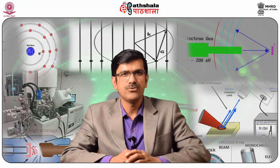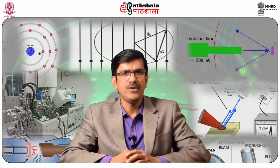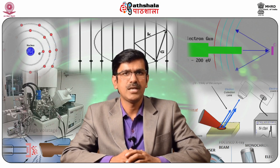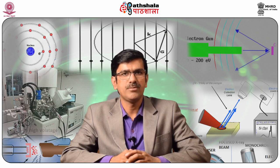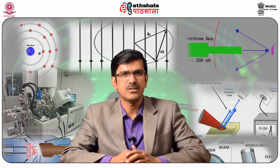Why is ultra-high vacuum required? UHV is of the order of 10⁻¹¹ Torr pressure. It removes absorbed gases from the sample surface, eliminates adsorption of contaminants on the sample surface, prevents arcing and high voltage breakdown, and increases the mean free path of electrons, ions and photons.